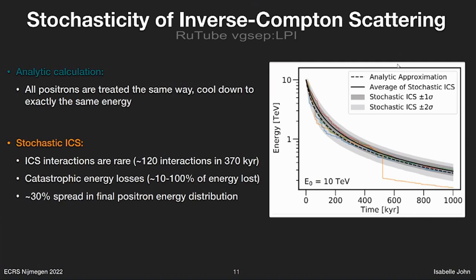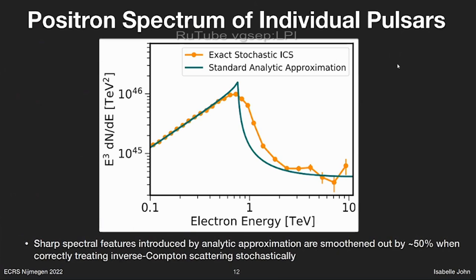If we now go back to our pulsar model and take this stochastic inverse Compton scattering into account, we get this result. In blue we have the analytic model with the sharp feature. Compared to that, the orange line shows our result where we took the stochasticity into account. We can see that the top of this peak is very rounded compared to the analytic model, and this sharp cutoff gets smeared out, giving a spread of around 50% for this feature. So we see that pulsars cannot produce sharp spectral features.